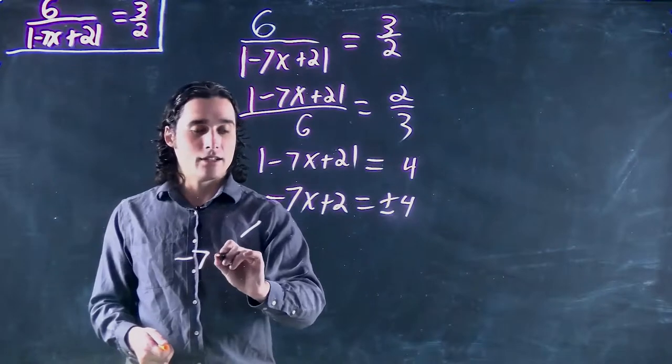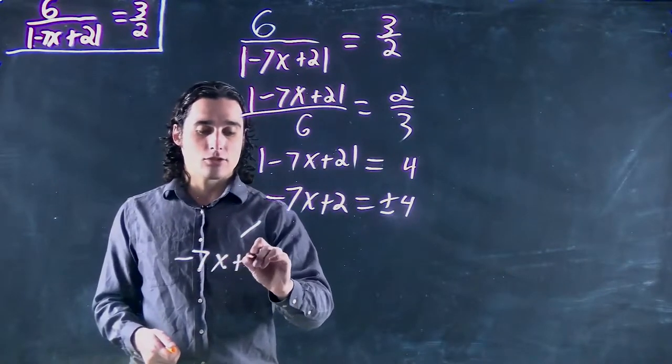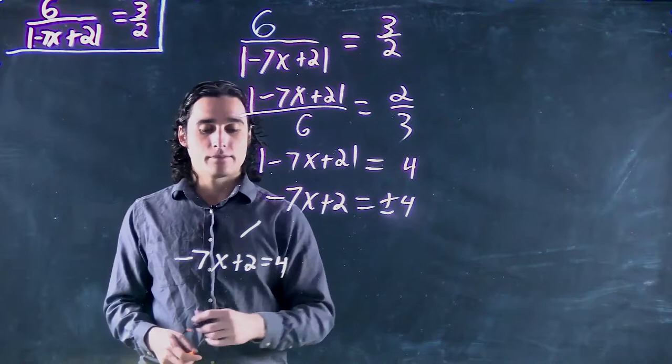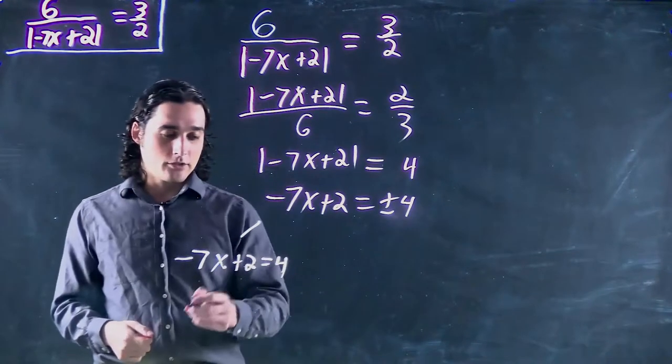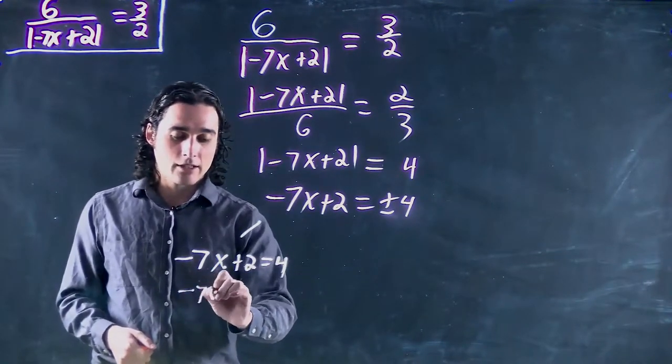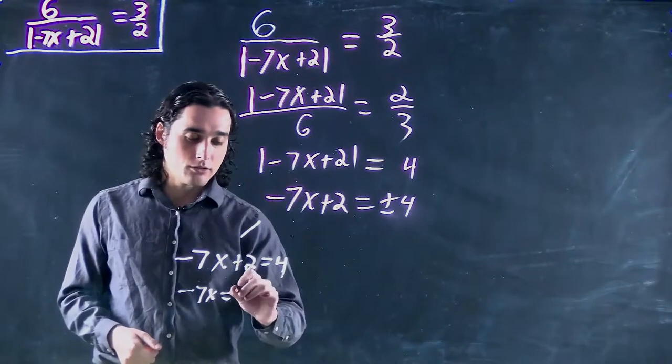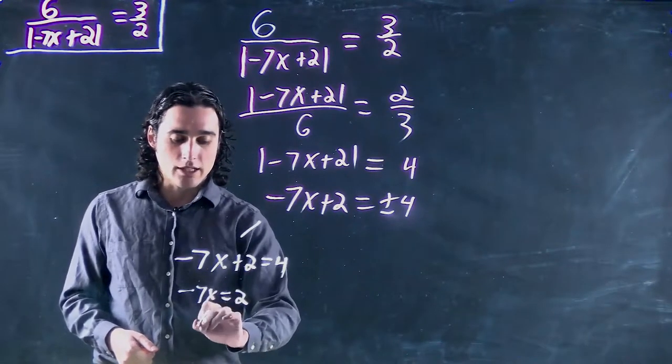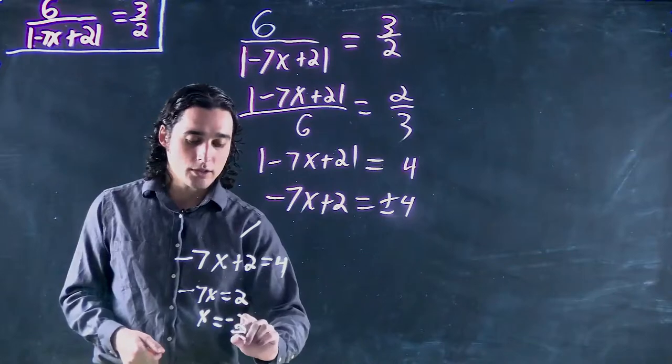So minus 7x plus 2 we're going to say is equal to positive 4. And so we get minus 7x equals 2. Or in other words, x equals minus 2 over 7.